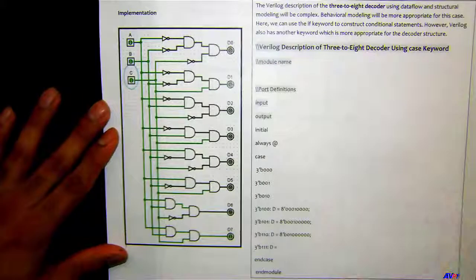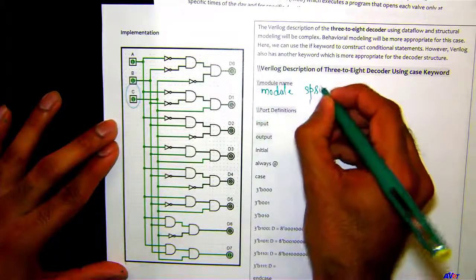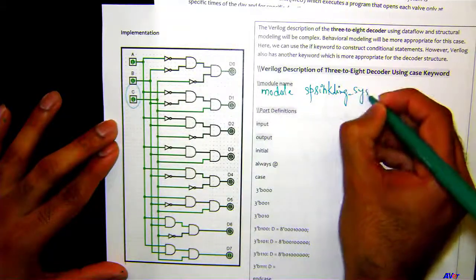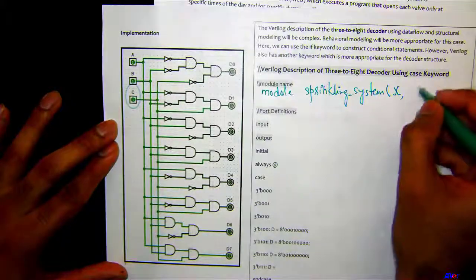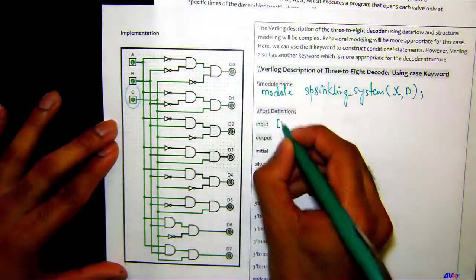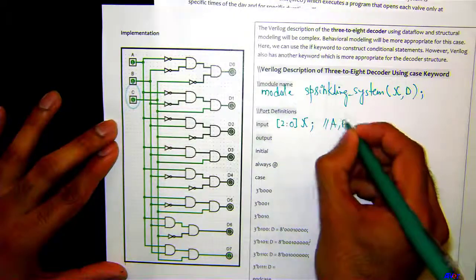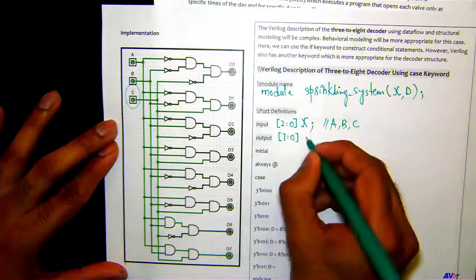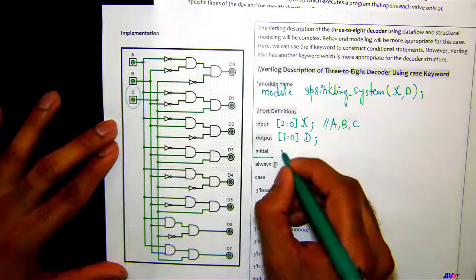Let's do the Verilog coding. We write: module sprinkler_system. The inputs are the three-bit array X, which represents A, B, and C. The output is the eight-bit array D, representing the eight sprinkler zones, declared as output D [7:0].